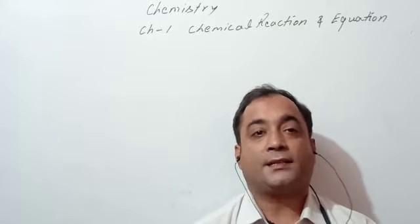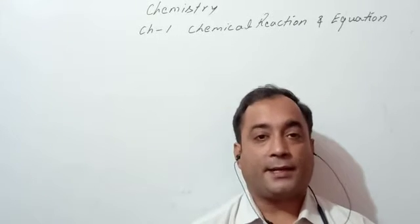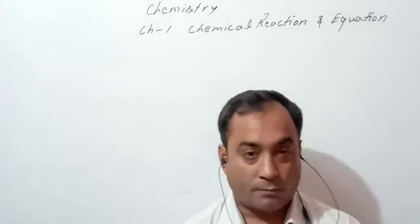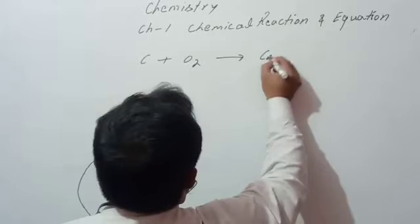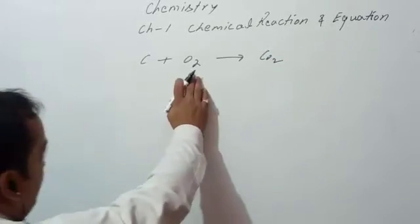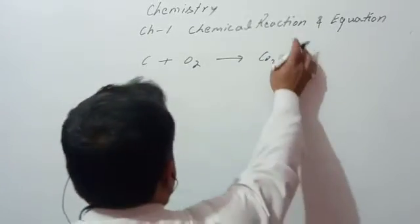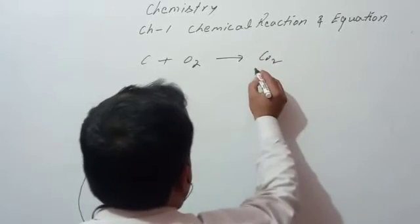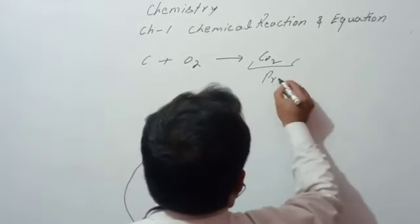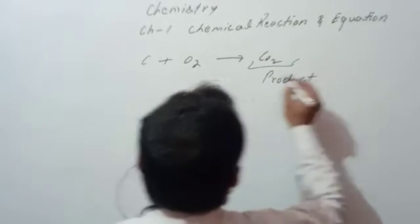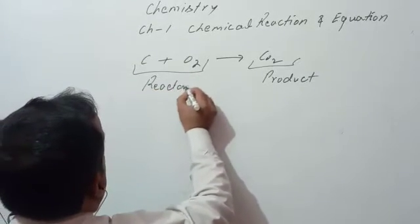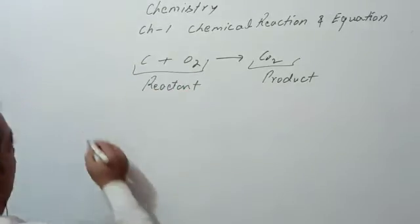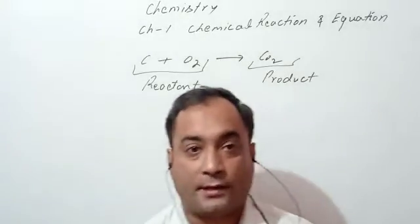For example, C plus O2 gives CO2, means carbon plus oxygen gives carbon dioxide. Here the carbon dioxide is a new substance and it is called product, and C plus O2 is reactant. Now we are going to study about characteristics of chemical reactions.